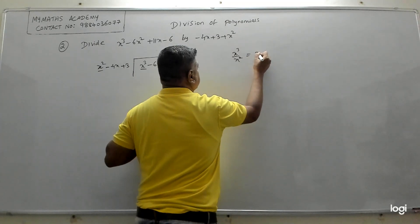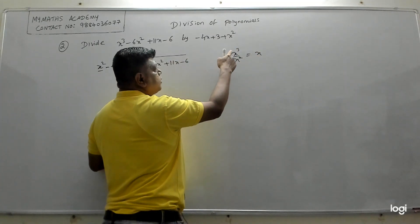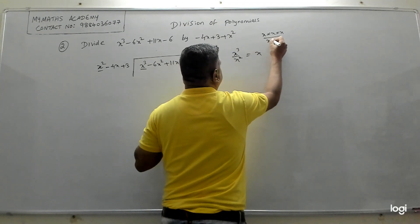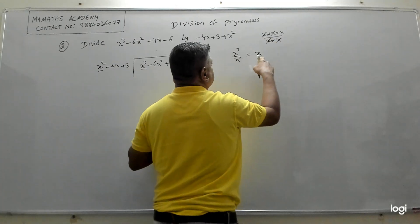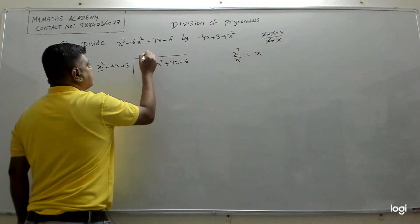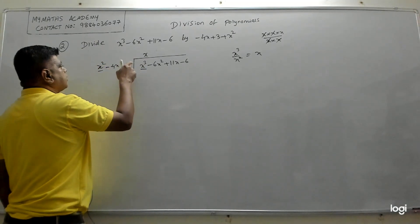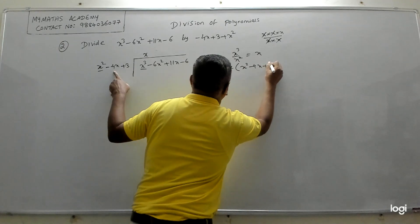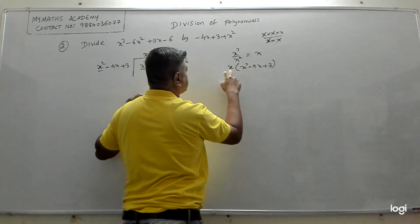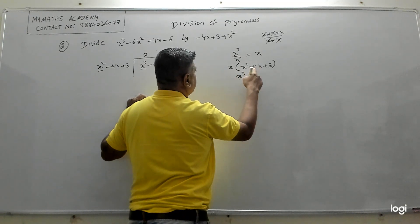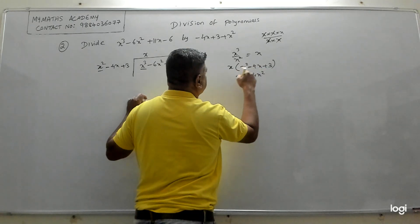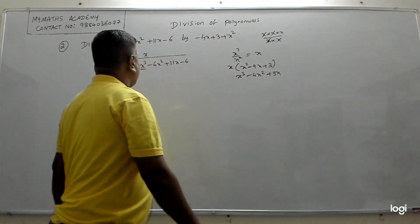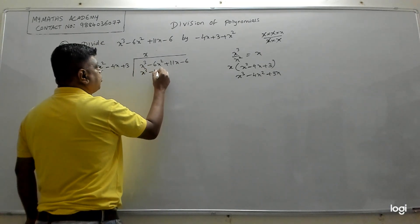Take the first term of the dividend by the first term of the divisor: x³ ÷ x² = x, because x³ divided by x² leaves one x. So write x in the quotient. Multiply x by the entire divisor (x² − 4x + 3): x × x² = x³, x × (−4x) = −4x², x × 3 = 3x.